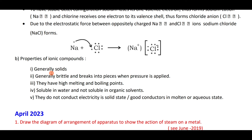Properties of ionic compounds: they are generally solids; brittle and break into pieces when pressure is applied; have high melting and boiling points; soluble in water but not in organic solvents; do not conduct electricity in solid state but conduct in molten state because ions are available and responsible for conduction.